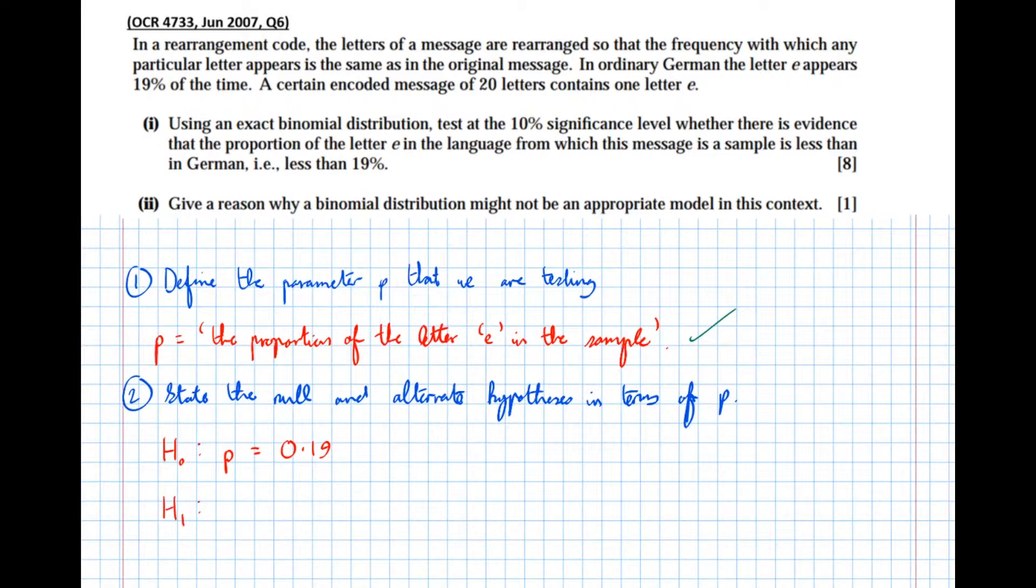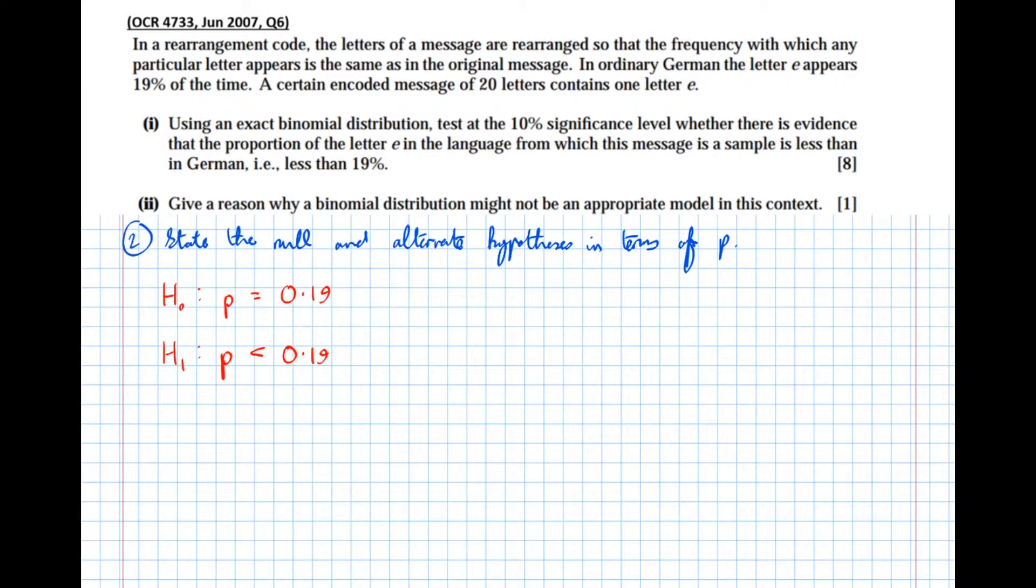However if we were to challenge the claim which somebody has in part one, it's claimed that the letter e occurs less than 19% of the time so p is less than 0.19. And that's our alternate hypothesis so we start off with a null hypothesis assuming what we're told is true, then a challenge is made to that claim. And I should point out now, again each of those is usually worth a mark, so tick for each of those.